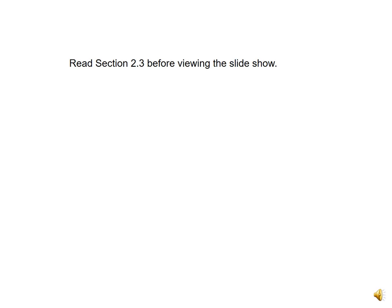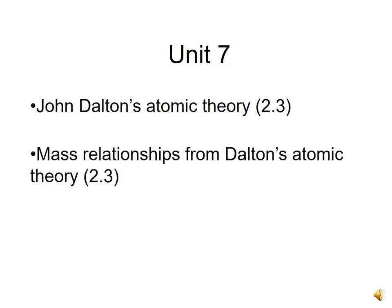Welcome to the PowerPoint show for section 2.3. In section 2.3 we look at a little bit of history, dealing with John Dalton's atomic theory and some of its implications for things we actually observe. There are two parts in this unit: Dalton's atomic theory itself — what the premises are and how it looks today — and the second is some of the mass relationships we can gather from Dalton's theory.